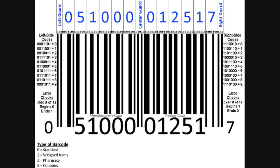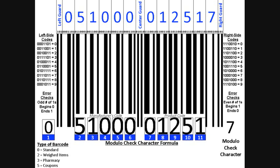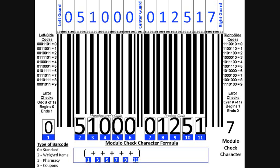And finally, the last number on the right-hand side is called the modulo check character, and this is another form of error checking. When the computer scans the barcode and processes the numbers, it needs a final way to know that it read and processed everything correctly. So it performs a calculation and comes up with the modulo check character. The formula is based upon the positions of each of the numbers at the bottom of the barcode — it first adds up the digits in the odd-numbered positions, then adds up the digits in the even-numbered positions, then multiplies the odd-numbered digits by three and adds that amount to the sum of the even-numbered digits.